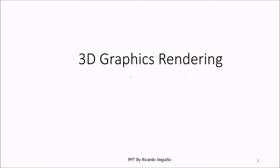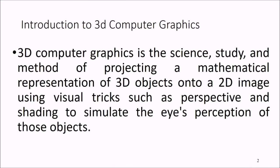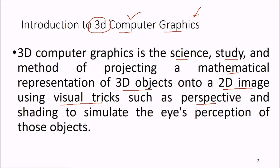We are talking about 3D graphics rendering, 3D computer graphics. What is 3D computer graphics? 3D is three dimensional. So 3D computer graphics is the science, study and method of projecting a mathematical representation of 3D objects onto a 2D image using certain visual tricks such as perspective and shading to simulate the eye's perception of those objects.